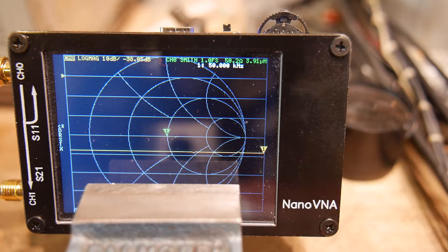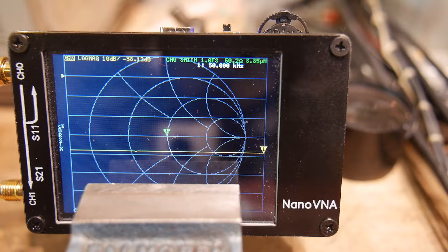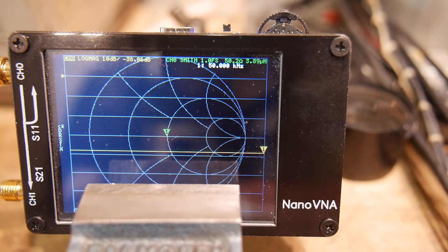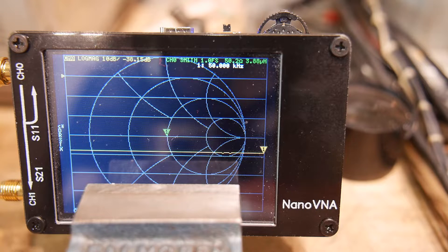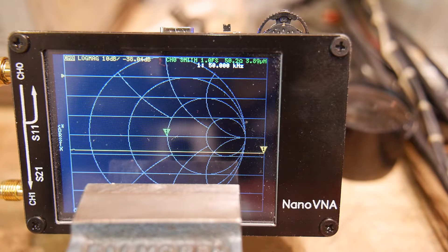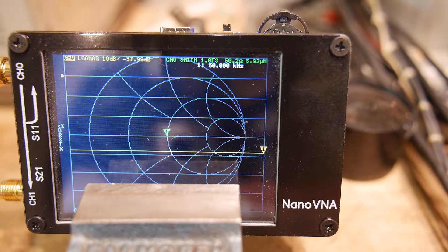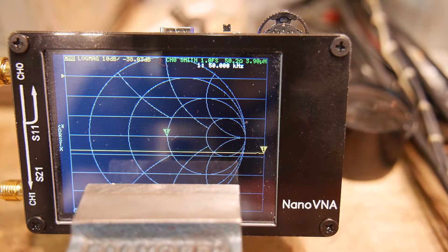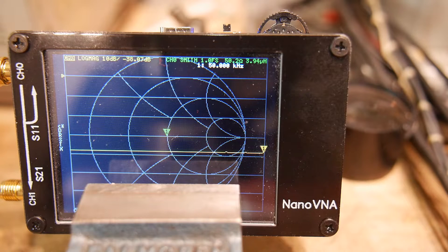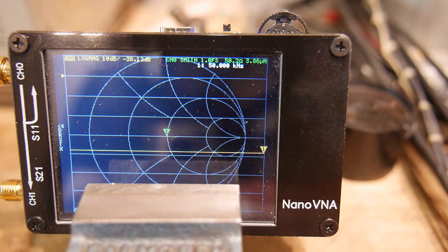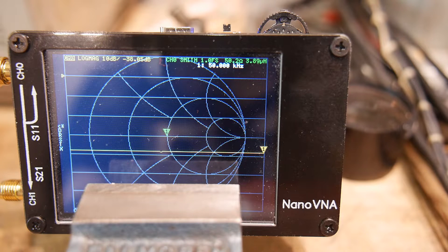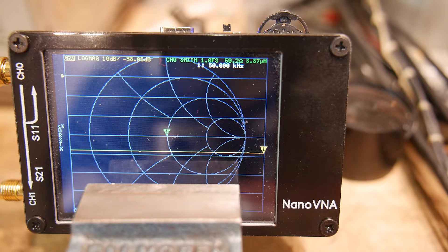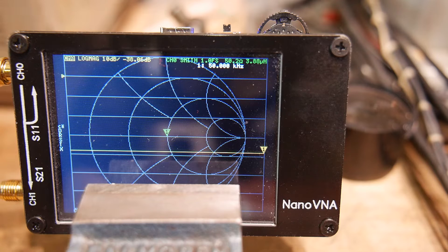And we're actually measuring 50.2 ohms. That 0.2 ohms might be the cable length. I didn't calibrate out the cable, so 50.2. So we'll say that there's probably a 0.2 ohm overhead in the system here. Now we are looking at 50 kilohertz. So that's as slow as this thing will go.